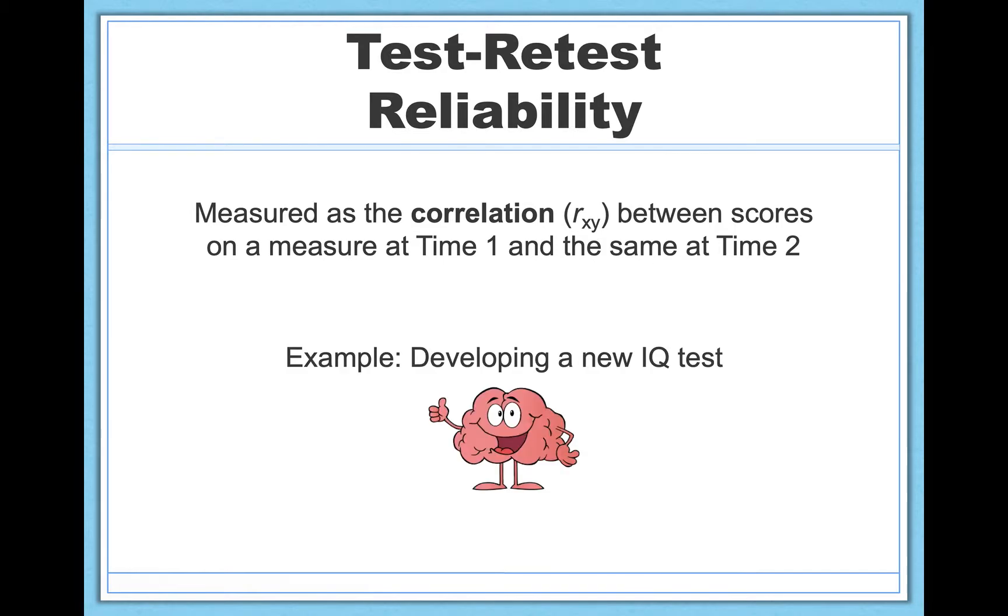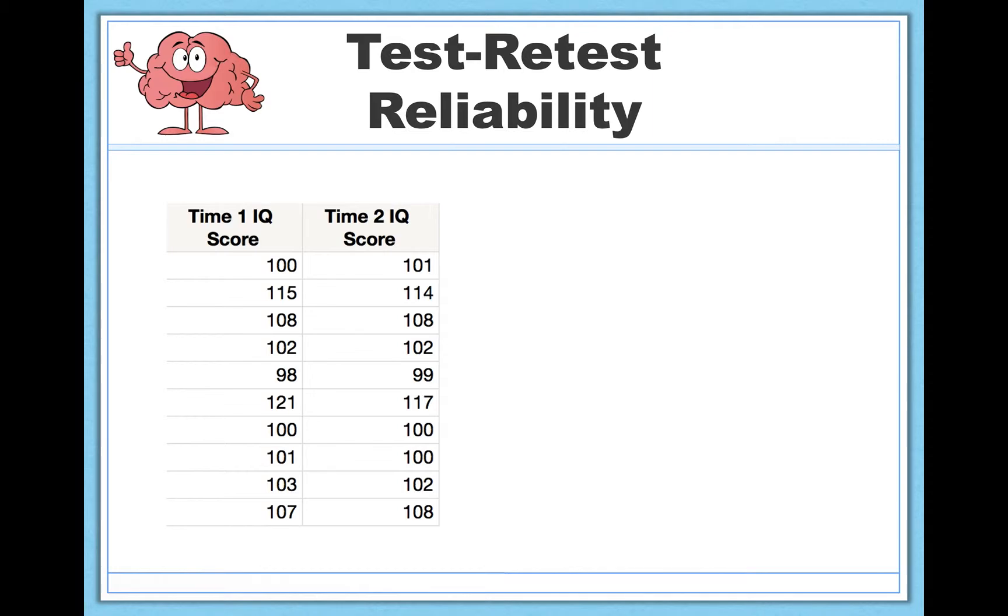So let me illustrate with an example. Let's say I want to develop a new IQ test. Well, if my IQ test is actually doing a good job of measuring people's IQ, we would expect people to score similarly the first time they take the test, and the second time they take the test. So let's look at some sample data here. These are scores at time 1, and these are scores at time 2, of the same participants. So if you take a quick scan here, you'll see we're doing pretty well. Let's say it's like a month later when they take the test again. So here, participant 1 starts out with an IQ of 100, right at average, and they end up with an IQ of 101. Very similar.